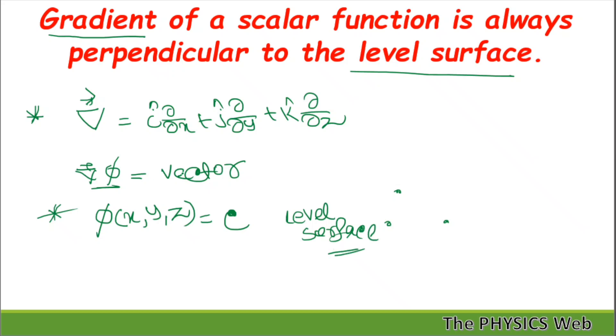As we are saying, gradient of a scalar function gives us a vector quantity. As it is a vector, it will have a direction. This gradient vector points in a direction perpendicular to the level surface phi. So what we will do: we will define a tangent on the surface, then we will see that this vector is perpendicular to that tangent.